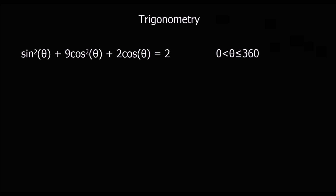Now we're going to look at a question that uses that identity. We've got sin²θ + 9cos²θ + 2cosθ = 2, and we're going to solve it for θ between 0 and 360 degrees. We're going to use cos²θ + sin²θ = 1, and we need to make it into a quadratic.